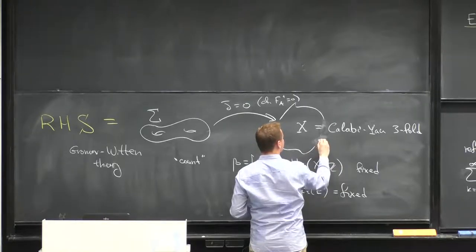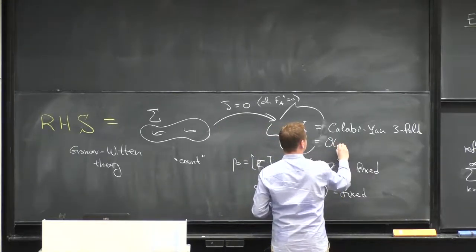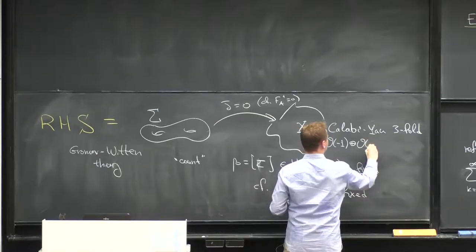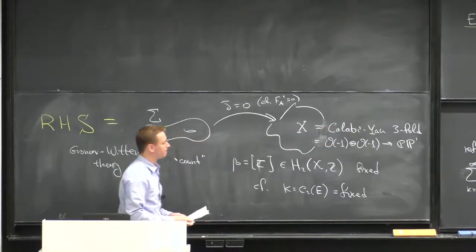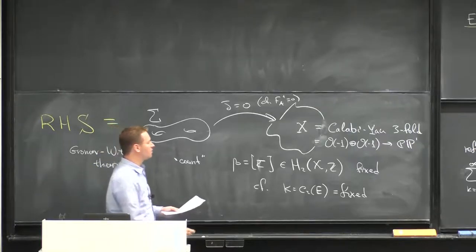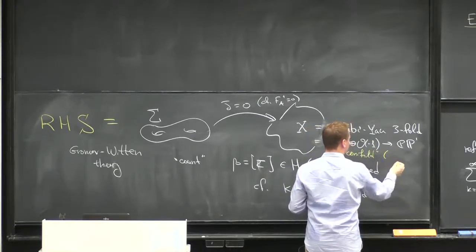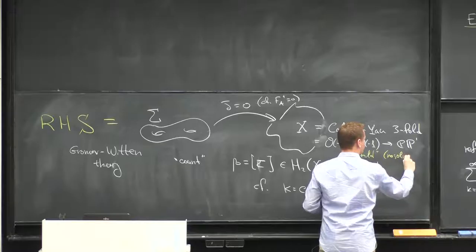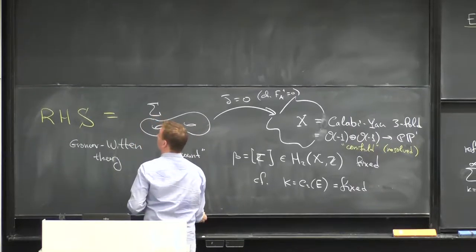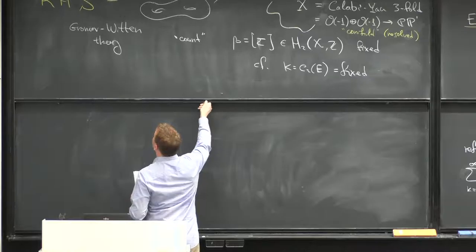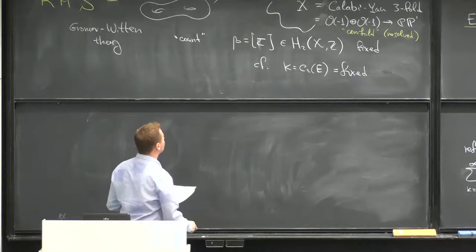We're counting solutions to PDEs on a Calabi-Yau 3-fold — a 6-real-dimensional manifold. For the sake of my discussion, I'll take a very specific example: X to be non-compact, just as our 4-manifold was, and take it to be the total space of O(−1) ⊕ O(−1) over ℂP¹. This space is often called the conifold, or more precisely the resolved conifold.